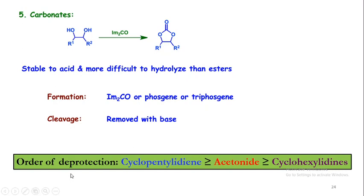This is the order of deprotection: the cyclopentylidene is most easily deprotected, then acetonide, then cyclohexylidene.